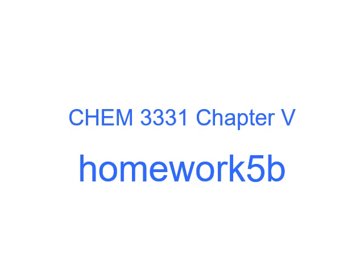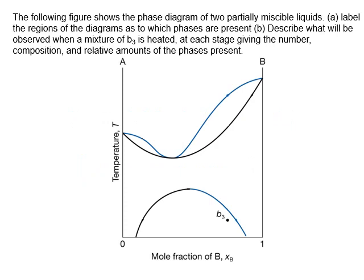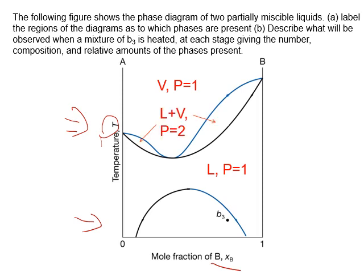In homework 5b question one, you are asked to label the regions of the diagram as to which phases are present. Notice this is a temperature-composition phase diagram — it's a combination of a liquid-vapor and liquid-liquid phase diagram. At high temperature it's only vapor phase, and in between a single liquid phase. In another region, liquid and vapor coexist as two phases. Here you have two phases where liquid separates into two liquids.